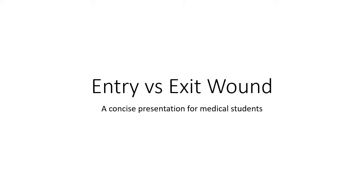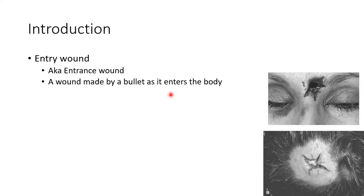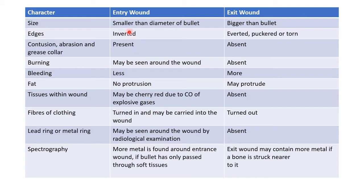Hello guys, this is Indian Medico. In this video we will see the differences between entry and exit wound. Entry wound is also known as entrance wound — it is a wound made by a bullet as it enters the body. Exit wound is the opposite: it is a wound made by a bullet as it leaves the body. This picture shows an entry wound, and this is an exit wound.